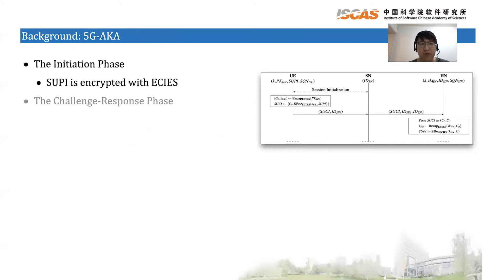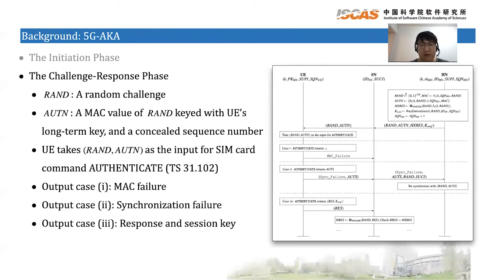Before we give the details of our proposal, I will introduce some background for 5G-AKA and linkability attacks. The 5G-AKA protocol consists of the initiation phase and the challenge-response phase. In the initiation phase, SUPI is encrypted with ECIES by the UE and sent to the HN. In the challenge-response phase, the HN generates a random challenge denoted by RAND and an AUTN message. The AUTN message includes a MAC value of RAND keyed with the UE's long-term key and a concealed sequence number. Then the UE takes RAND as the input for SIM card command authenticate. The authenticate command checks MAC and checks message freshness. If the check on MAC fails, it outputs MAC failure. If the check on freshness fails, it outputs synchronization failure. If all checks pass, it outputs a response and a session key for subsequent 5G procedures.